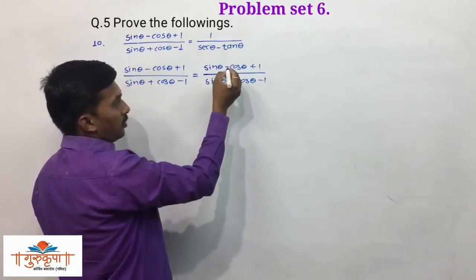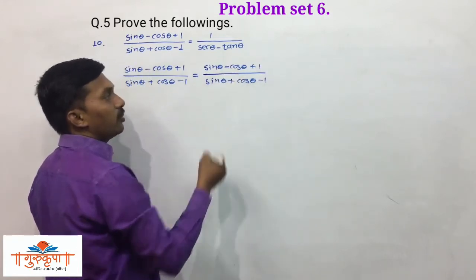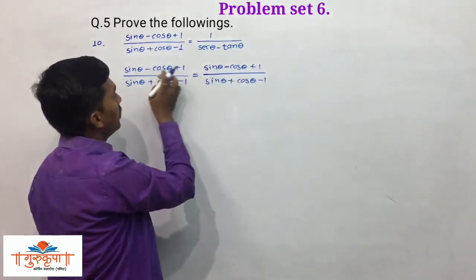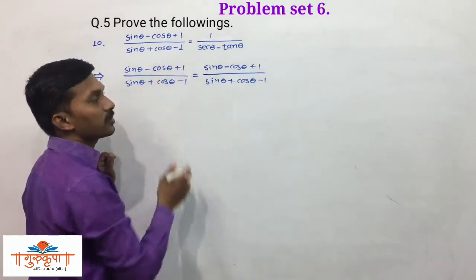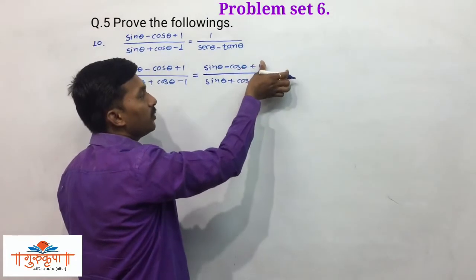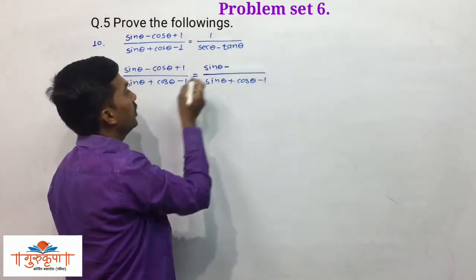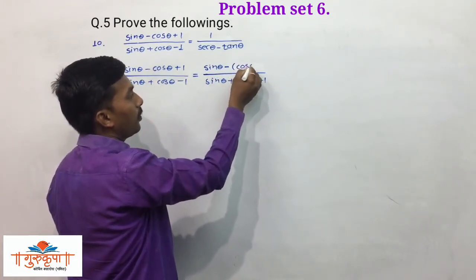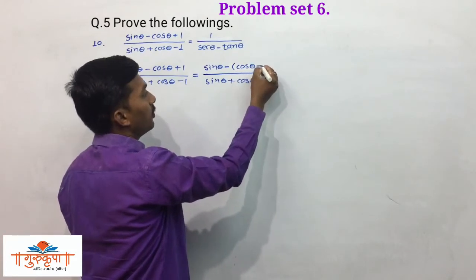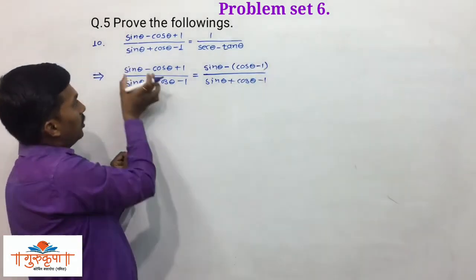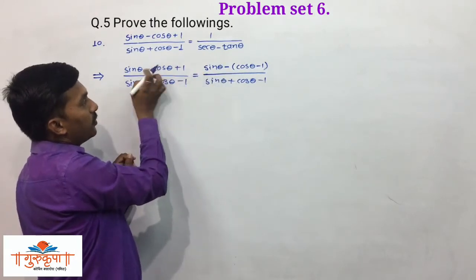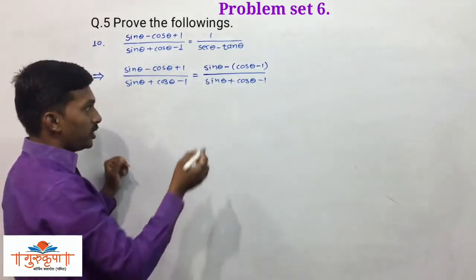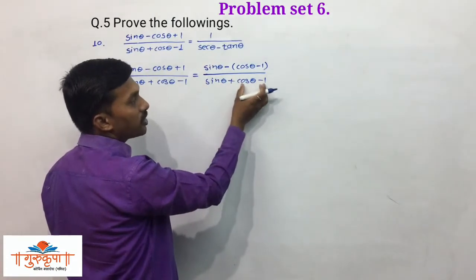Here we have to take minus sinθ common from the first two terms in the numerator. Once we take minus sinθ common, inside the bracket we will get cosθ - 1. We put sinθ as it is, and from these two terms we take minus sinθ common, leaving cosθ - 1 inside the bracket. In the denominator we have sinθ + cosθ - 1.